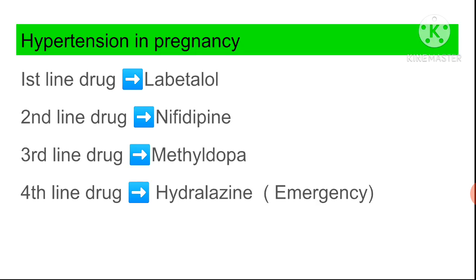Question two: what is the drug of choice for hypertension in pregnancy? The first line drug is labetalol — available in both oral and IV forms. The second line drug is nifedipine, a calcium channel blocker, available in oral form. Third line is methyldopa in oral form. Fourth line is hydralazine, used in emergencies via IV.